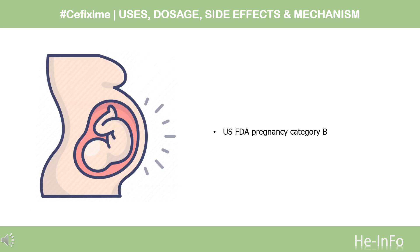Safety Advice. US FDA Pregnancy Category B: Animal reproduction studies have failed to demonstrate a risk to the fetus, and there are no adequate and well-controlled studies in pregnant women. Use is recommended only if clearly needed and the benefit outweighs the risk.